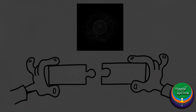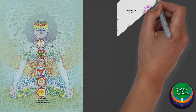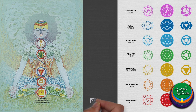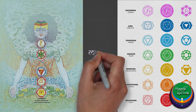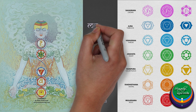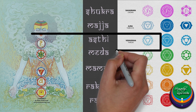Moving to an even subtler plane, the dhatus and their respective dhatu agni have been correlated with the chakras of the human body. From the bottom up, each chakra corresponds with the seven dhatus. That is, Rasa corresponds to Mooladhara, Rakta to Swadhishthana and so on. Hence, Asthi dhatu corresponds with Vishuddha chakra.